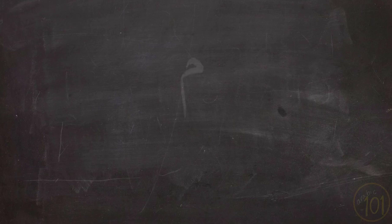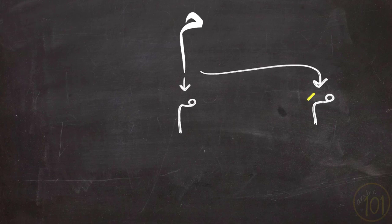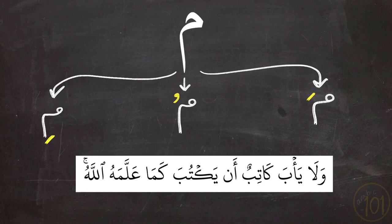Meem is one of the easiest and most universal sounds, found in almost every single language on earth. In the Holy Quran, it is also an easy sound as long as it has a short vowel on top or under it, and you'll pronounce it normally like in these examples.